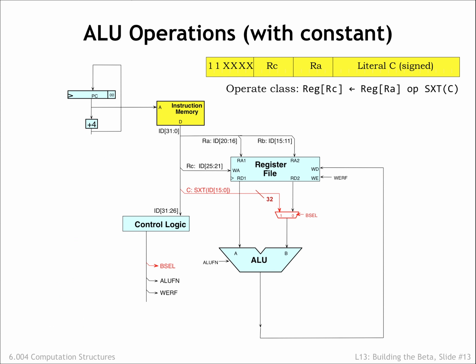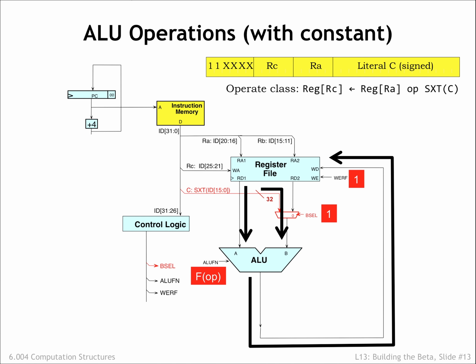During execution of ALU-with-constant instructions, the flow of data is much as it was before. The one difference is that the control logic sets the BSEL control signal to 1, selecting the sign-extended constant as the second ALU operand. The control logic generates the appropriate ALU function code, and the output of the ALU is routed to the register file to be written back to the RC register. Amazingly, this datapath is sufficient to execute most of the instructions in the beta ISA. We just have the memory and branch instructions left to implement — that's our next task.